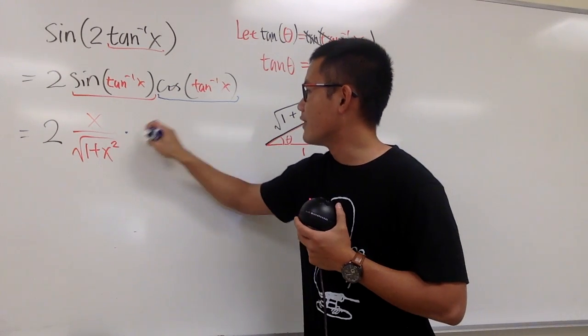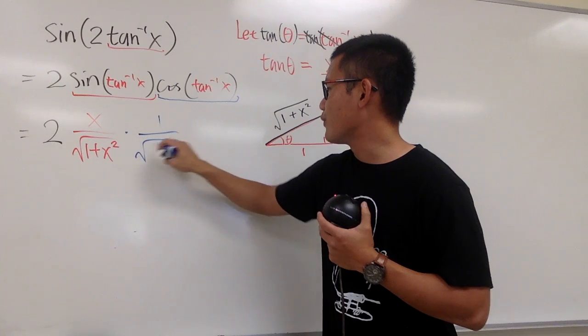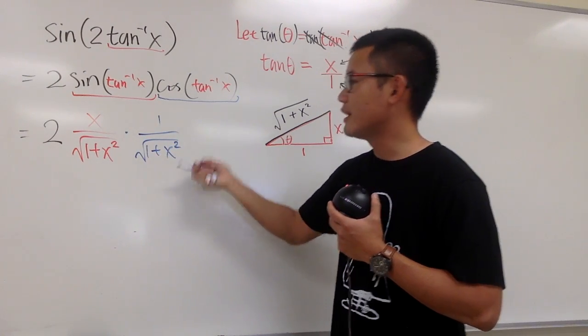So for this, we will have 1 over that √(1 + x²), like this.